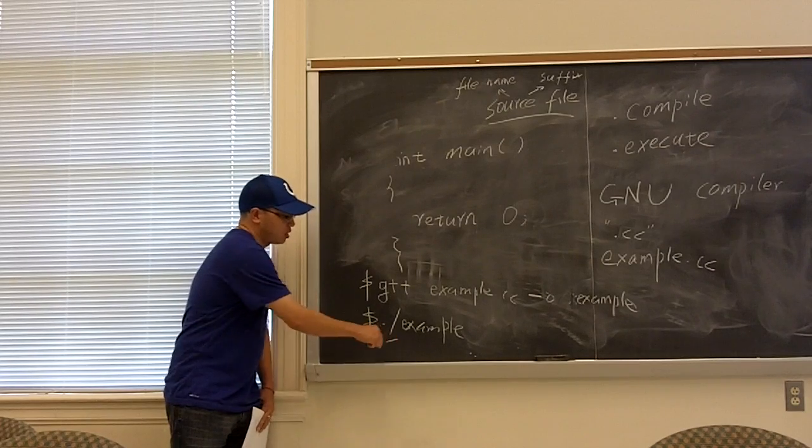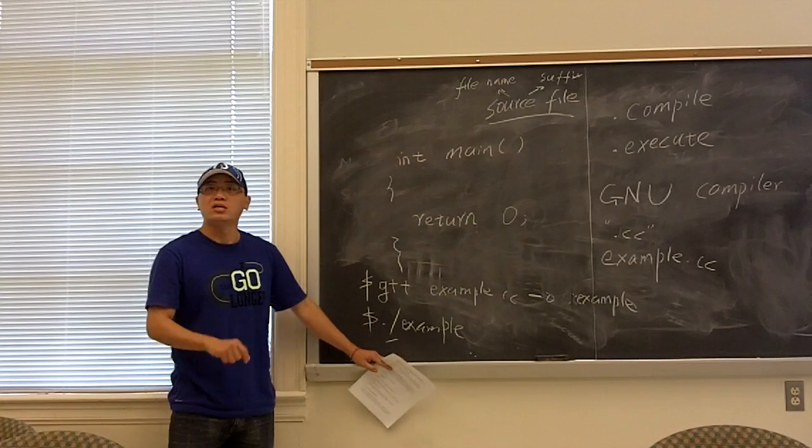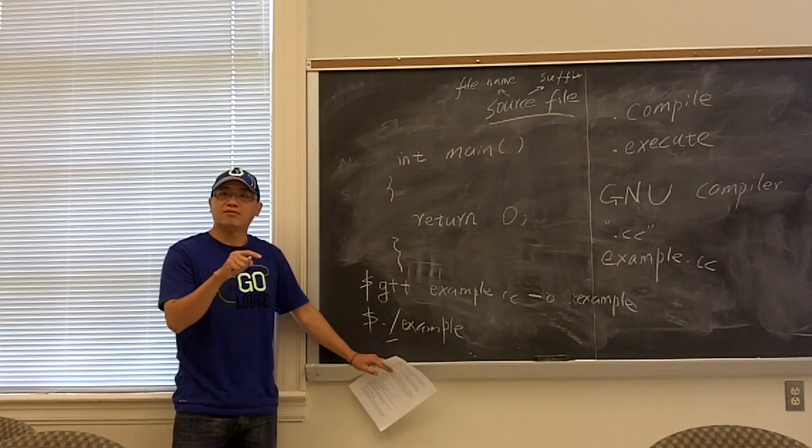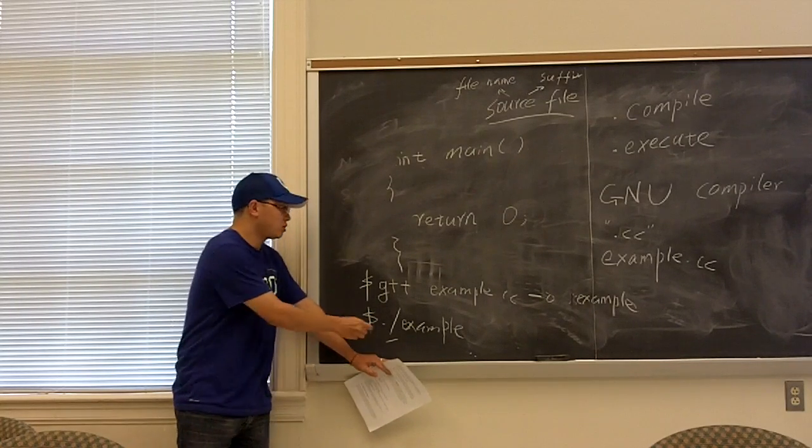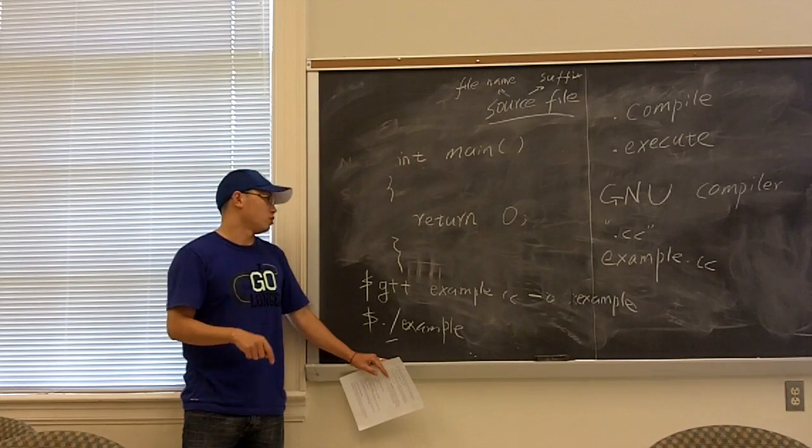The dot slash means that when we want to run a program, we need to specify the path of this file. So the dot slash means that this program is under current folder. Okay.